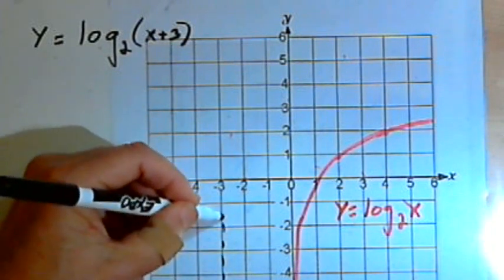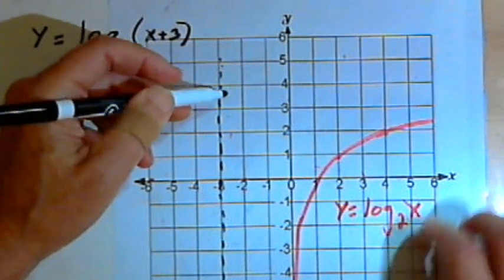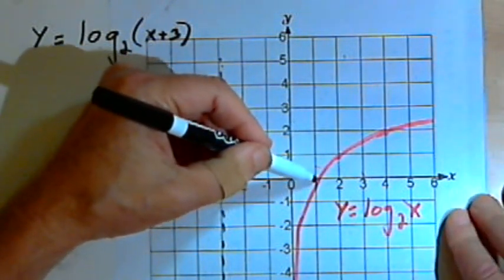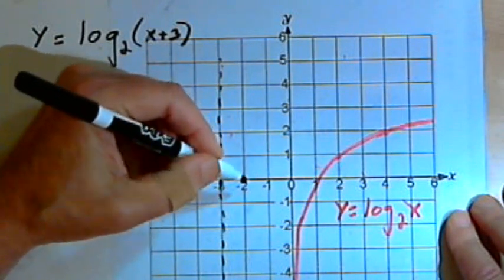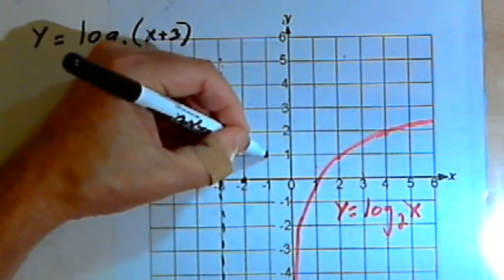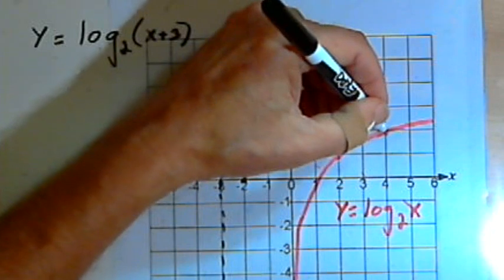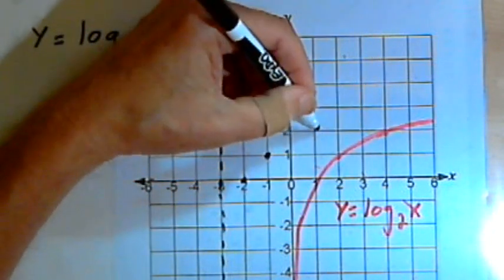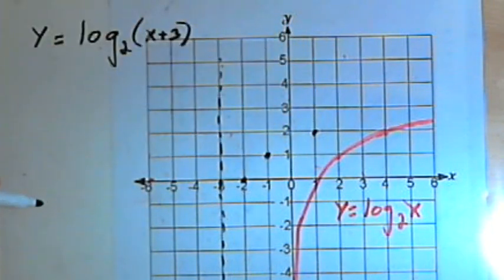I'll have a new vertical asymptote that's going to be at x equals negative 3. The x-intercept, which was at (1,0), would be at (-2,0). The point that was at (2,1) would be at (-1,1). And this point at (4,2) would be at (1,2).